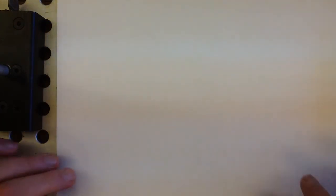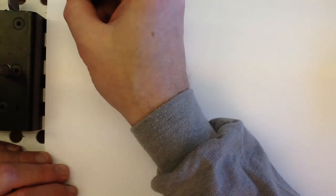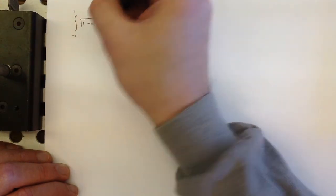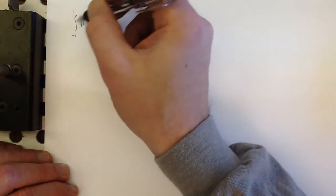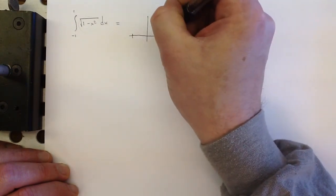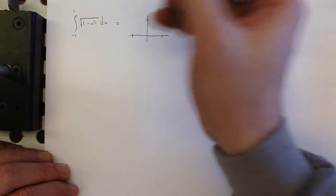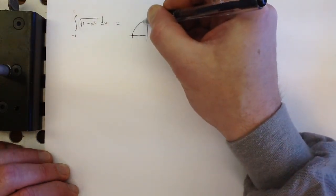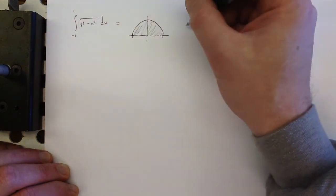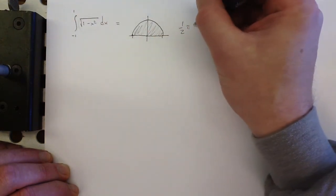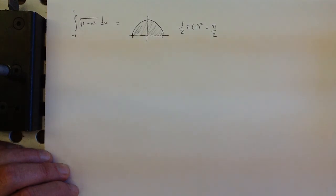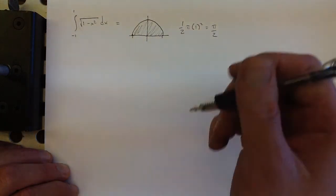And then just give you one more. How about from negative 1 to 1, square root of 1 minus x squared dx. What is that? That is the top half of the unit circle. So what's that area? Well, it's half the circle. So it's 1 half pi times the radius squared, which is pi over 2.